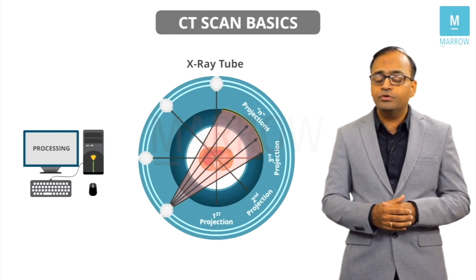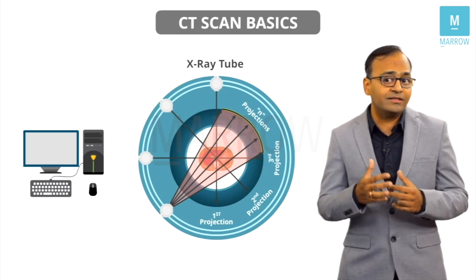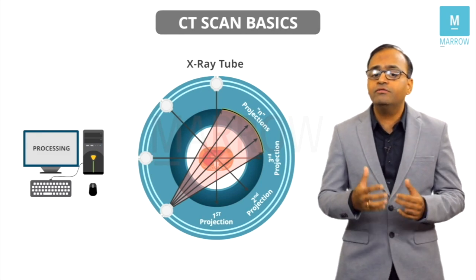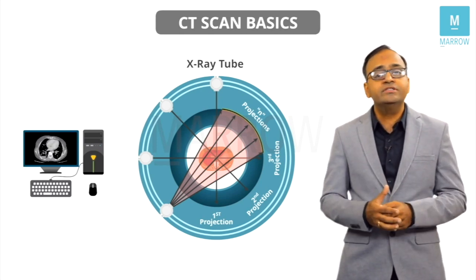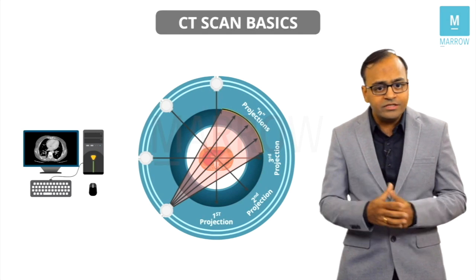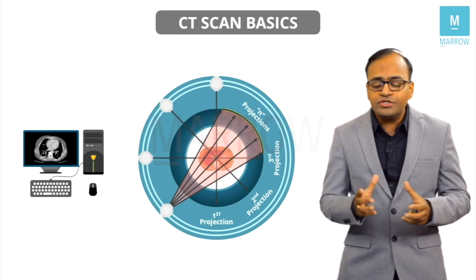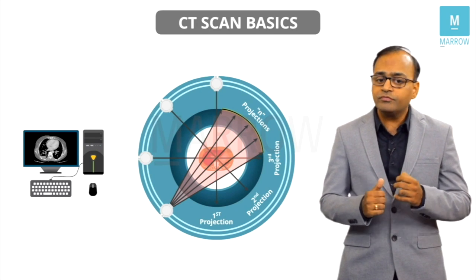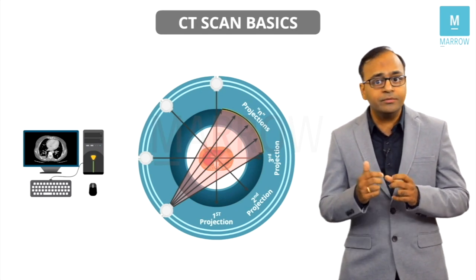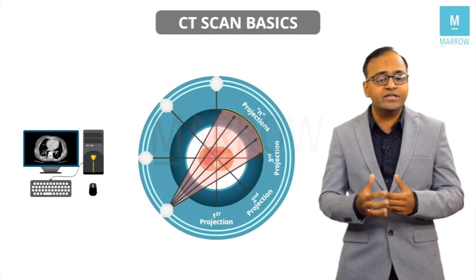What does the computer do? The computer processes all this data — a lot of complex mathematics is applied — and at the end of all the processing, what you see is the CT scan image on the computer screen. Look at this image: this is a CT scan thorax image. You can see the chest wall, the heart shadow, the right lung, the left lung, the vertebral bodies, and various details inside the heart and lungs.